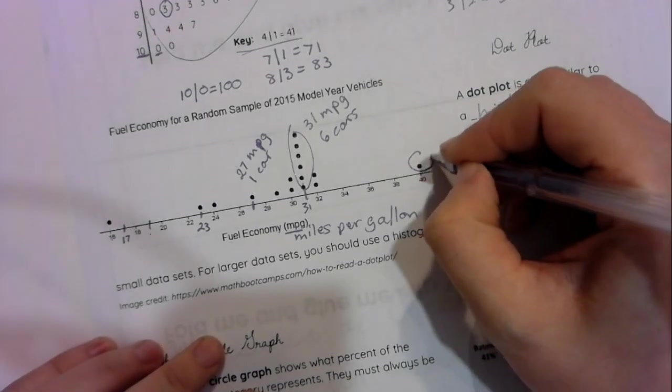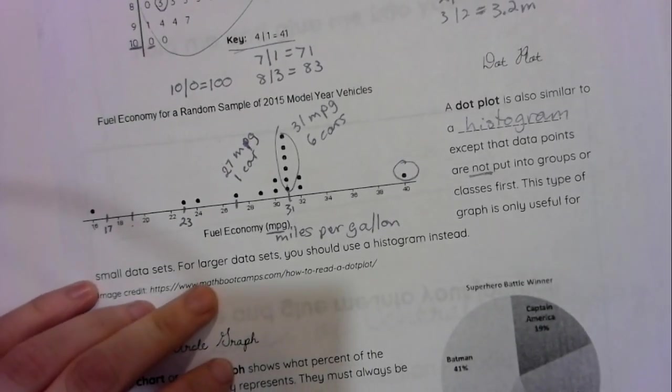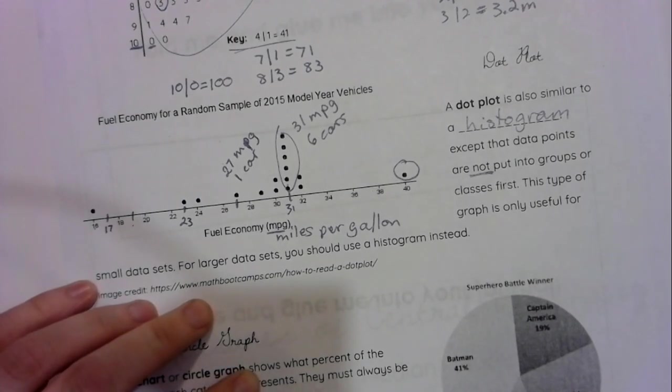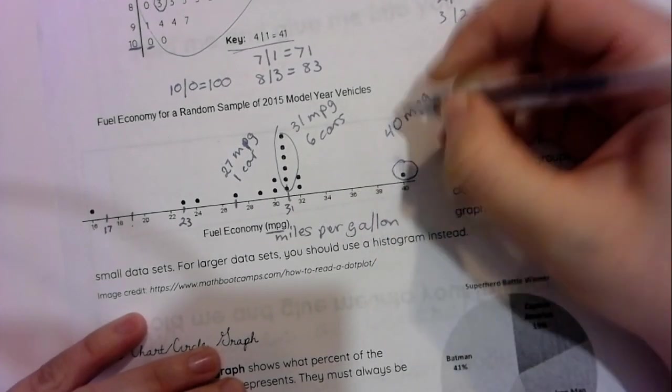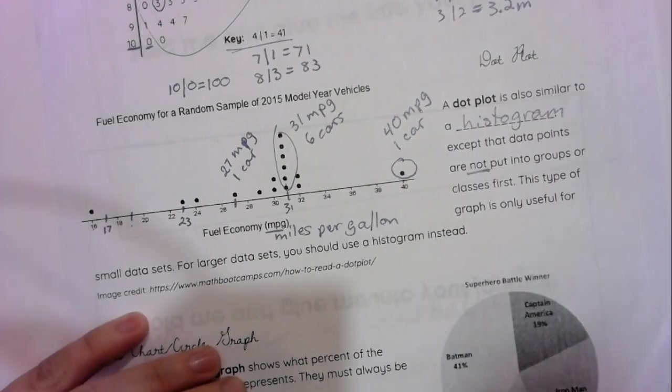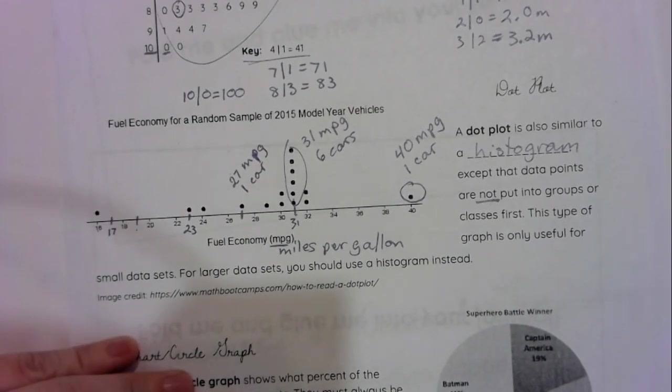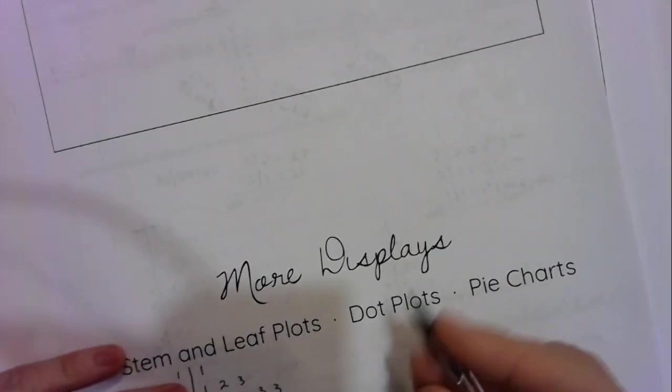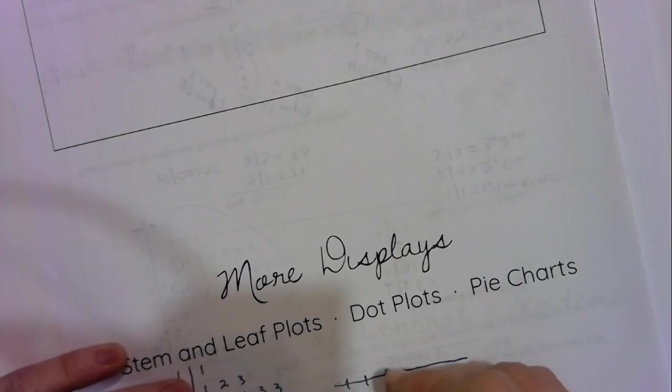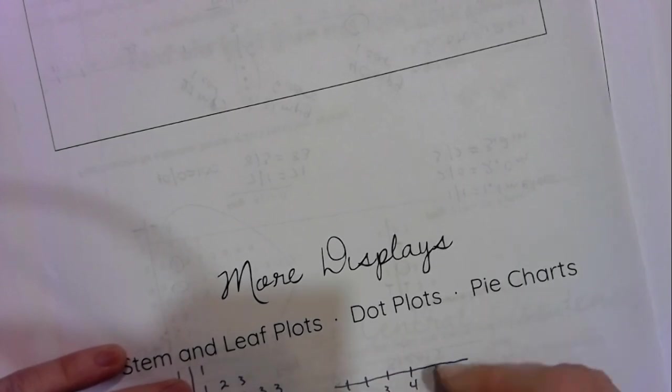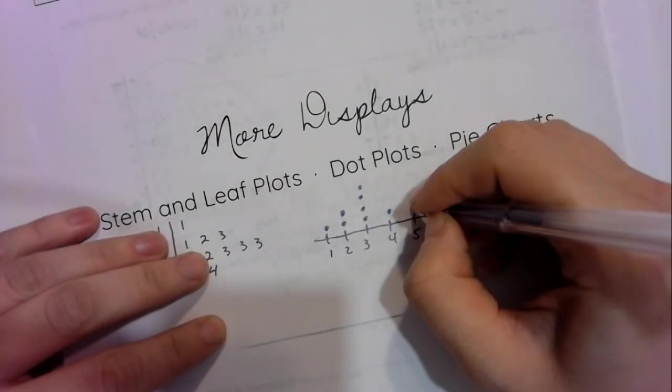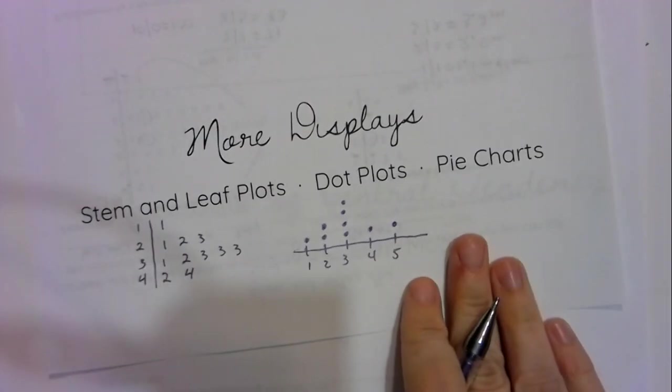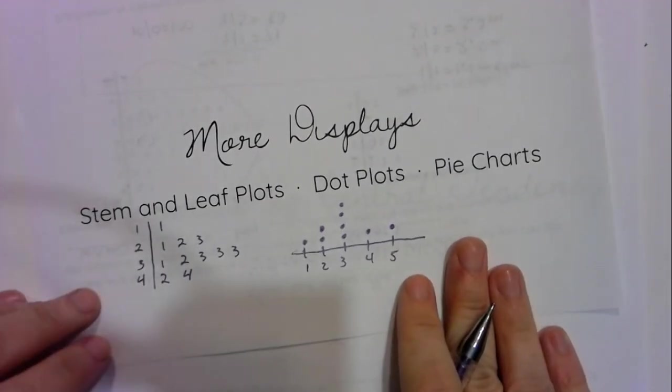So what would that mean? What would that one point mean? Think about that. Pause the video if you need to. And hopefully, you said that that means there is one car with a fuel economy of 40 miles per gallon. Alright, flip that over to the front and just put a little mini dot plot so you know what you're going to learn about in these notes next time you look at them. Again, I'm just making up numbers. I'm not getting these from anywhere. It's just so you know what this is about.